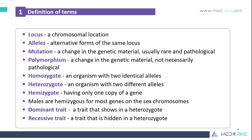A mutation is a change in the genetic material, and these mutations are usually rare and pathological in nature. Polymorphism is a change in the genetic material that is not necessarily pathological. A homozygote is an organism with two identical alleles, and a heterozygote is an organism with two different alleles. A hemizygote is an instance of having only one copy of a gene — males are hemizygote. A dominant trait is one that shows in heterozygotes, and a recessive trait is one that is hidden in heterozygotes.